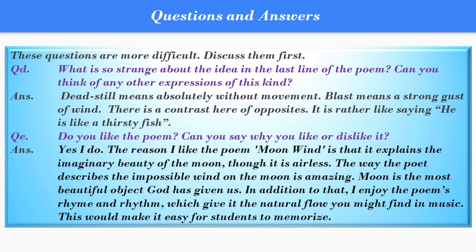Question D: What is so strange about the idea in the last line of the poem? Can you think of any other expressions of this kind? Answer: Dead still means absolutely without movement; blast means a strong gust of wind. There is a contrast here of opposites, rather like saying he is like a thirsty fish in water. Question E: Do you like the poem? Answer: Yes, I like this poem. The reason I like Moon Wind is that it explains the imaginary beauty of the moon, though it is airless. The way the poet describes the impossible wind on the moon is amazing. The moon is the most beautiful object God has given us. In addition, I enjoy the poem's rhyme and rhythm, which gives it a natural flow one might find in music. This would make it easy for students to memorize.